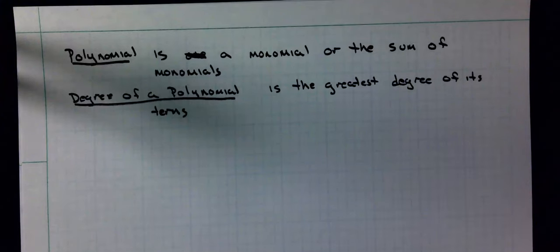The degree of a polynomial is the greatest degree of its terms. So, whichever term has the highest sum of exponents, that would be the overall degree. And we can classify polynomials two different ways.